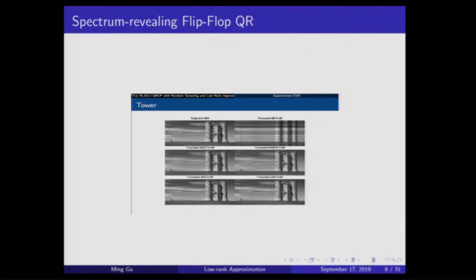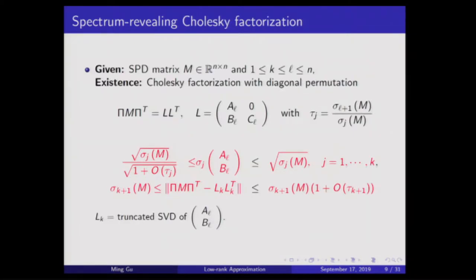Here's an example with a tower image. If you do QR without column pivoting, you get nothing. With QR with column pivoting you get a recognizable result, and the truncated SVD is the best you can hope for. There's an improvement from QR with column pivoting to flip-flop QR, with the two better methods looking nearly the same in quality but at improved accuracy.